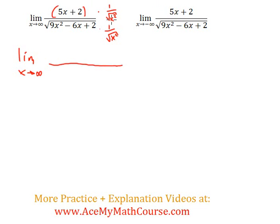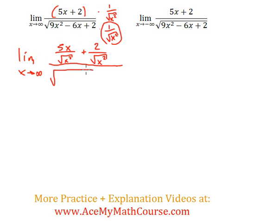I need to distribute the 1 over the square root of x squared, so I get 5x over the square root of x squared, plus 2 over the square root of x squared. Down below, we're multiplying a radical by a radical, so x squared sneaks in there — 9x² over x² minus 6x over x² plus 2 over x².